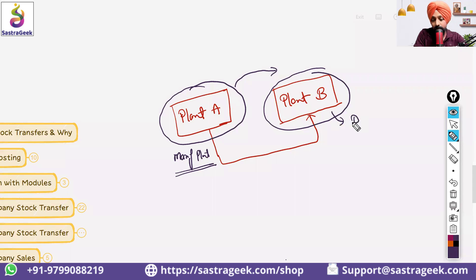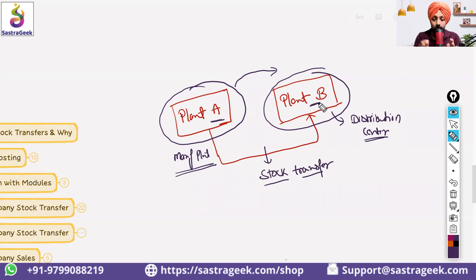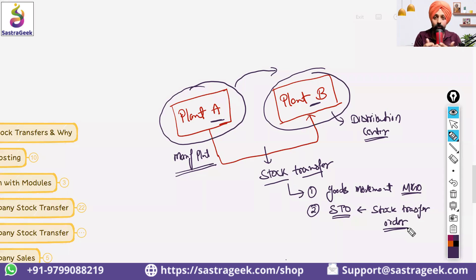Plant B is your distribution center. There are multiple different ways to get the stock transfer done. We can do a simple goods movement through a transaction called MIGO in SAP — M-I-G-O. Or we can also do it through STO, stock transfer order. From MIGO we can do one-step movement or two-step movement.